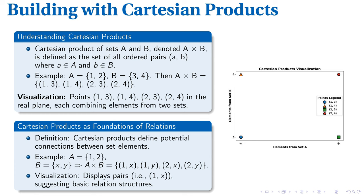It forms the backbone for creating relations. We see this when set A equals {1, 2} and set B equals {X, Y}. The possible connections appear as (1,X), (1,Y), (2,X), and (2,Y). This represents the fundamental structure of basic relations centered around Cartesian products.